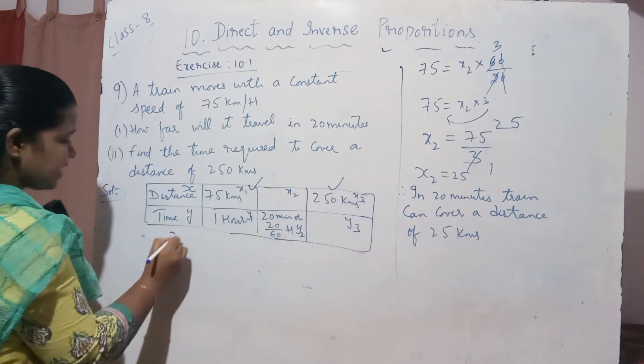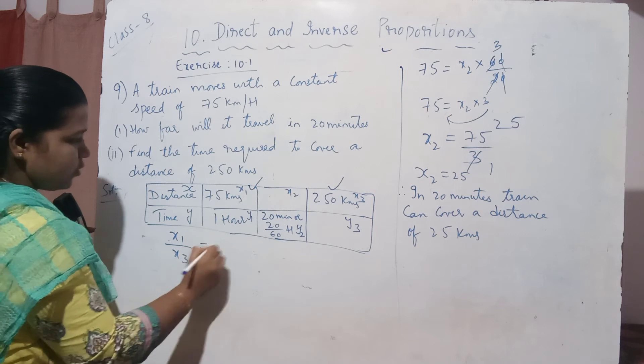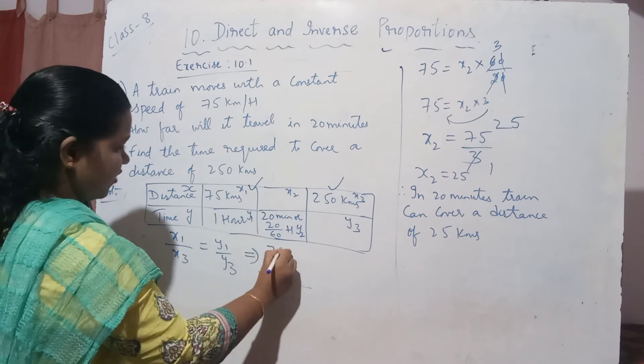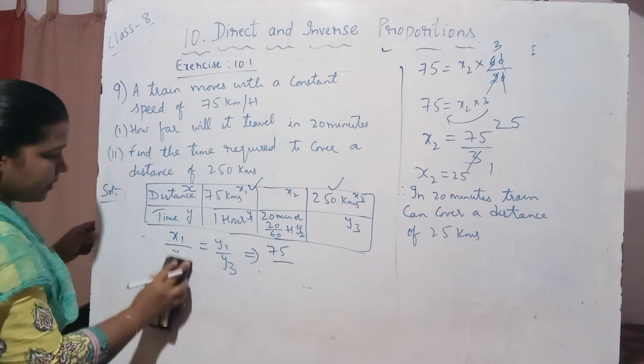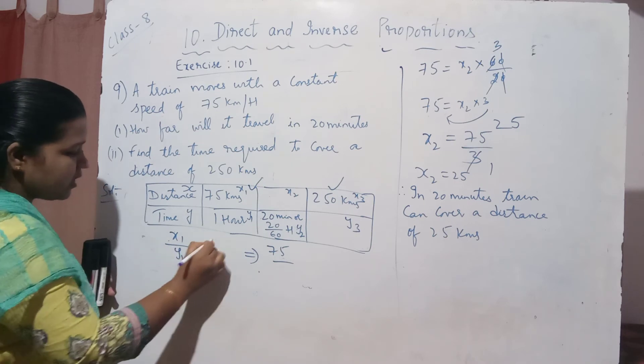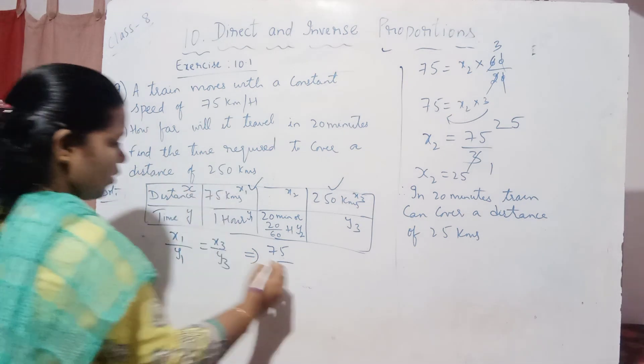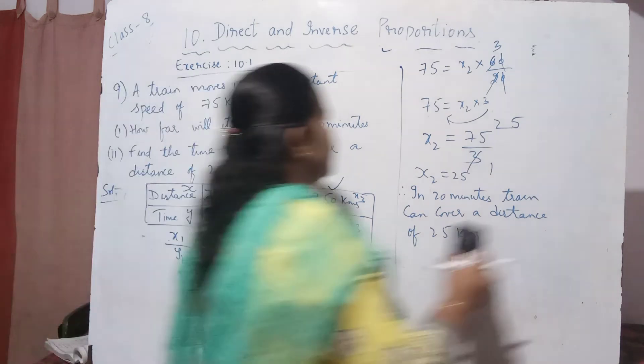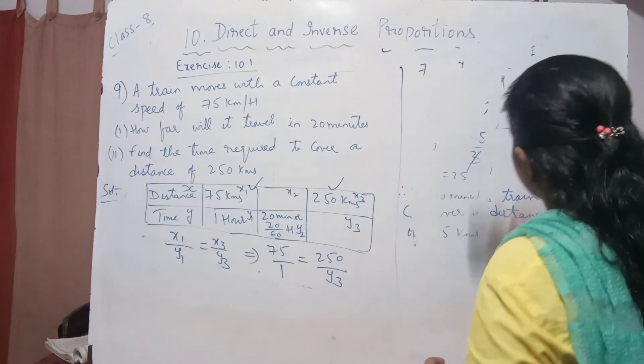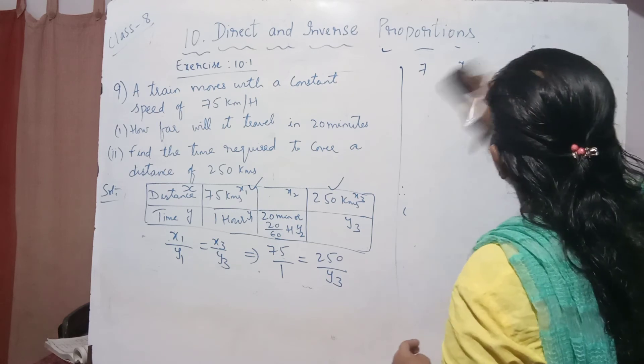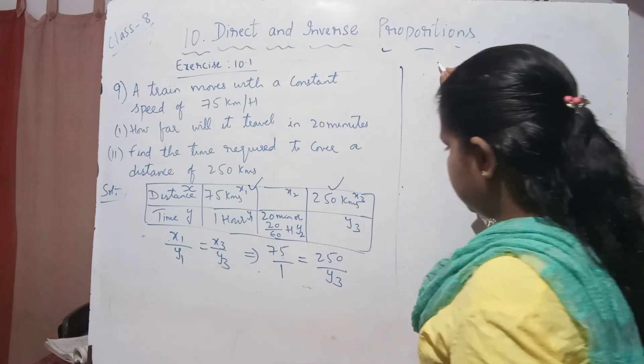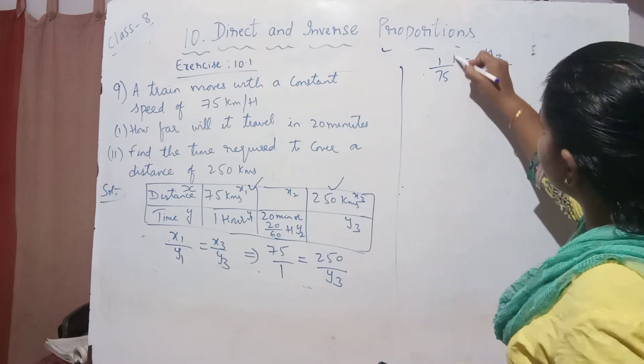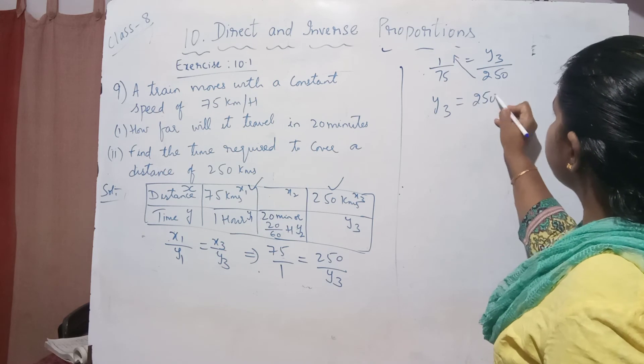For the second part, you take this one and this. So x1 by y1 equals x3 by y3. x1 by y1 equals 1, x3 is 250 by y3. You don't know y3, I am writing as is. I want the value of y3. Just write the reciprocal on both sides. So I will get 1 by 75 equals y3 by 250. Bring this 250 to the other side. So y3 equals 250 by 75.